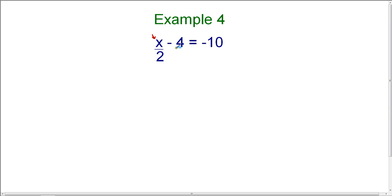The first thing that we want to get rid of is the minus 4, because it's the constant in the problem, meaning that it's not associated with the variable.